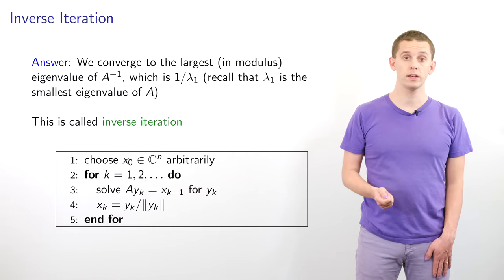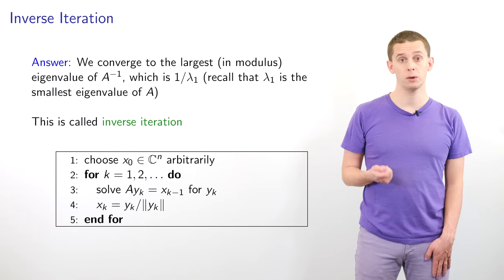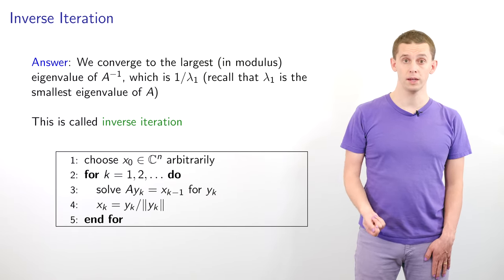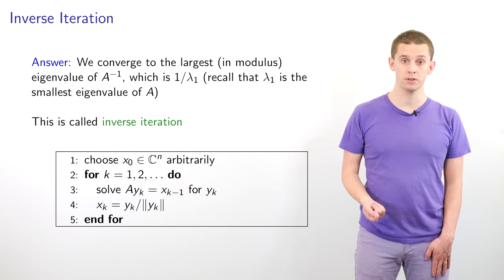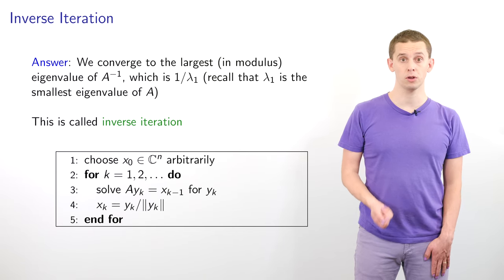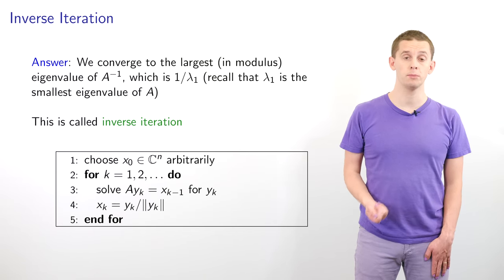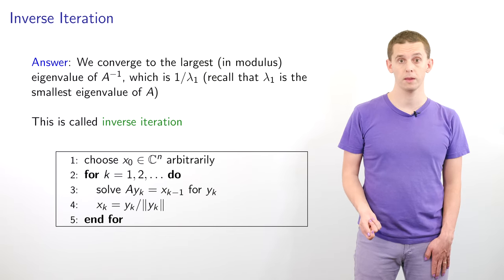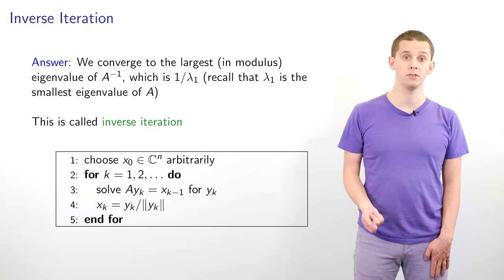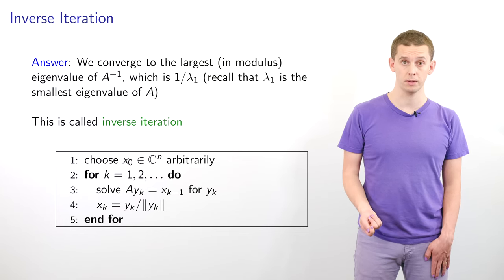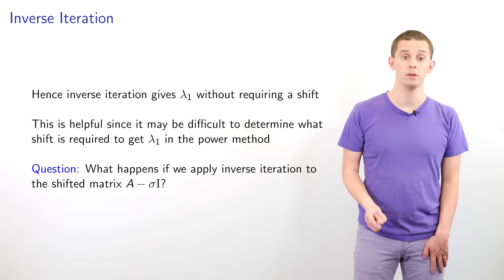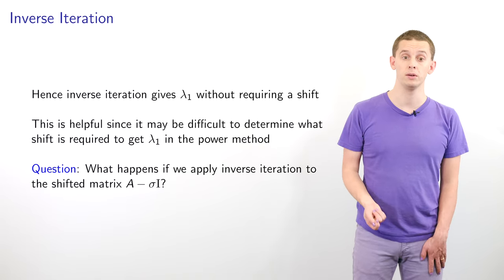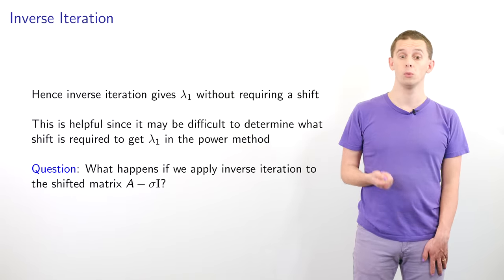This leads us to the inverse iteration. We again start with an arbitrary x0. We iterate for k=1, 2, and so on. At each step, we find y_k by solving the linear system A*y_k = x_{k-1}, and then compute x_k by normalizing y_k. Inverse iteration gives us lambda_1 without requiring a shift, which is helpful since it may be difficult to determine what shift is required to get lambda_1 in the power method.